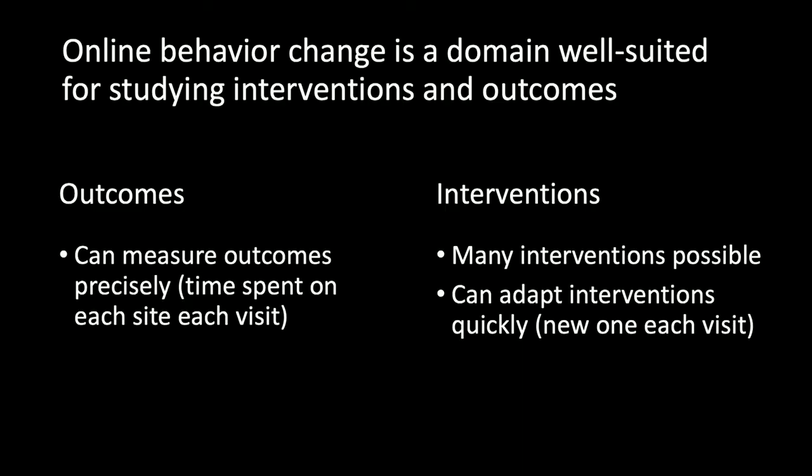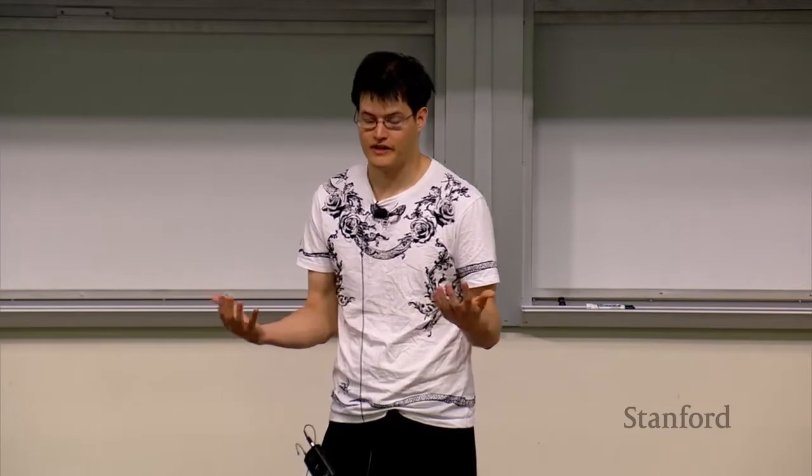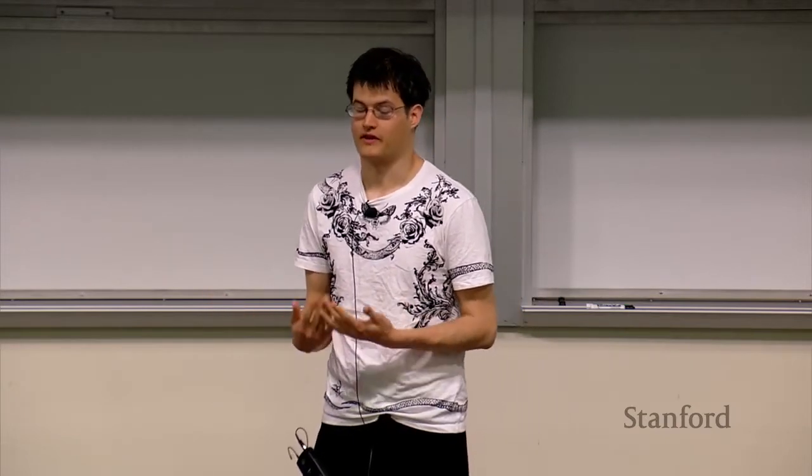I believe that online behavior change systems is a domain that's very well suited for studying these interventions and their outcomes. Specifically, we can actually measure outcomes very precisely — every time you visit a site, we can measure exactly how much time you spend. We can contrast this to other behavior change domains, for example dieting, where you need the person to self-report what they ate every day. And interventions are plentiful — anything you can draw on the computer screen can be an intervention, and you can adapt interventions very quickly, deploying a new one every time the user visits.